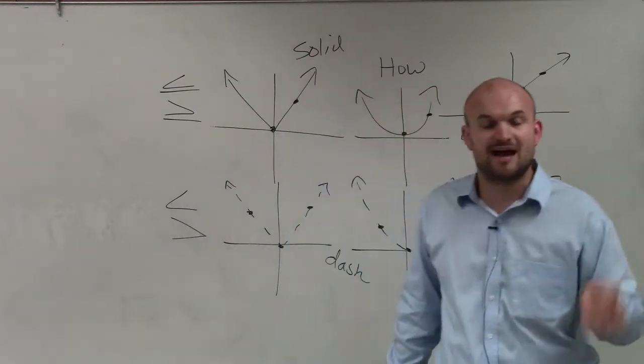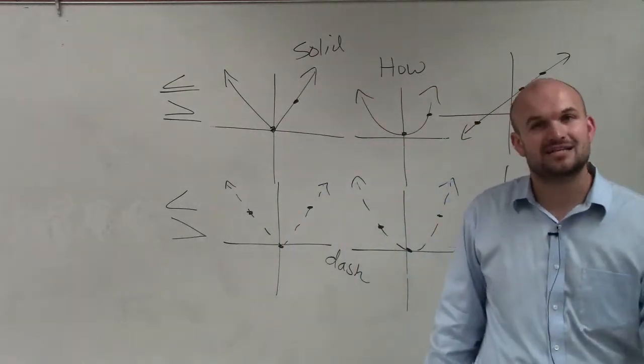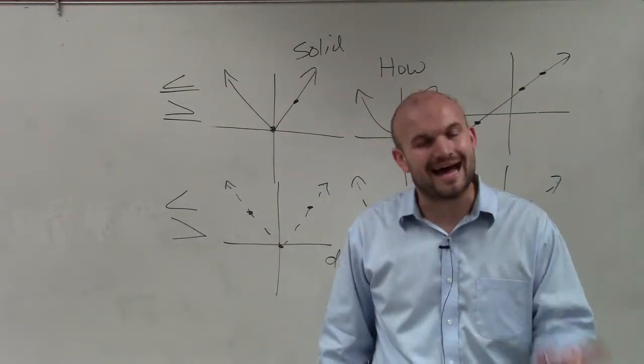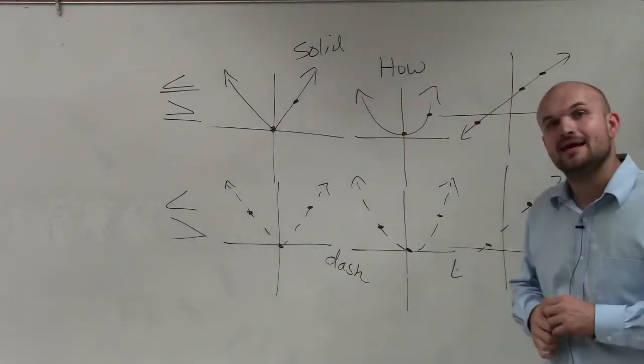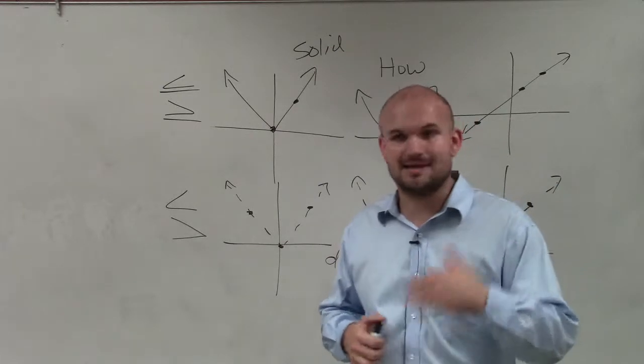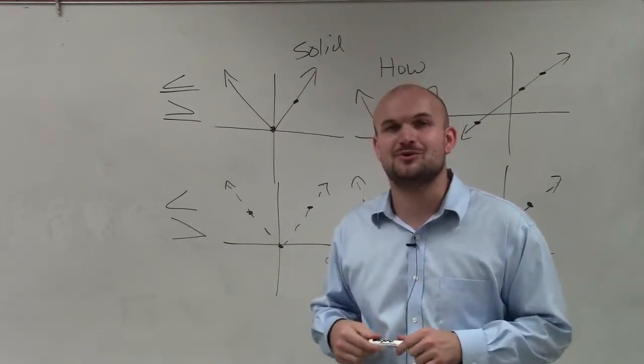Again, solid means that the points on the graph are a part of the solution. Dash means the points on the graph are not a part of the solution. So there you go, ladies and gentlemen. That is how you determine if a line, boundary line, is going to be dashed or solid. Thanks.